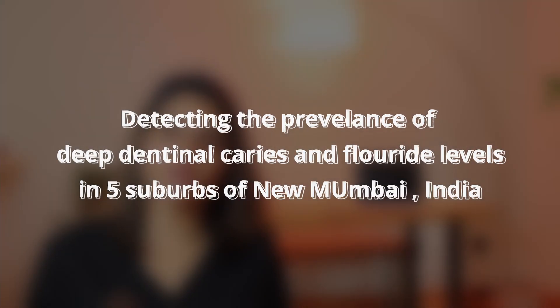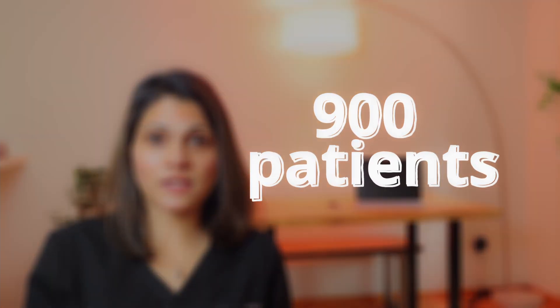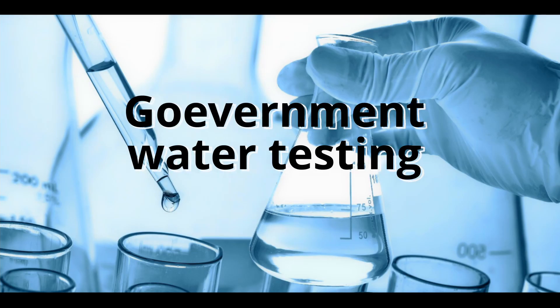For example, my friend's research involved detecting the prevalence of deep dental caries and fluoride levels in five different suburbs in Navi Mumbai, India. They collected data from around 900 patients coming to five different dental colleges in that area. They calculated the caries index, or the OHI-S, for all of these patients over about three to four months. After that, she and her research partner went to the government water testing center to get the fluoride water levels in those five areas. They were also fortunate to have a friend who helped them get data analysis done — a person who worked for the Times of India — which was a trusted and legitimate contribution.